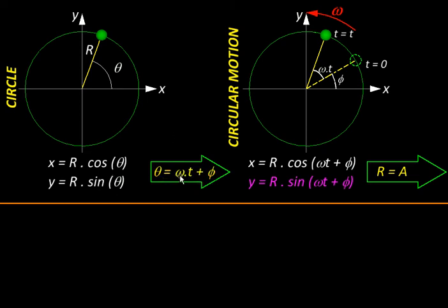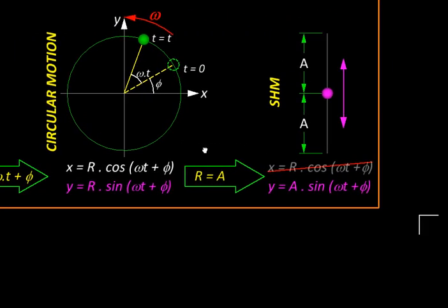Where x = R cos(ωt + φ) and y = R sin(ωt + φ). Now we are going to project this circular motion along the x direction.